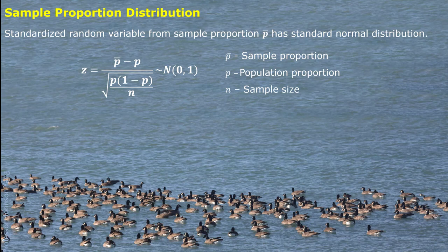p-bar is the sample proportion, p represents the population proportion, and n is the sample size. For the random variable p-bar, when it is standardized, the standardized random variable z has the standard normal distribution.